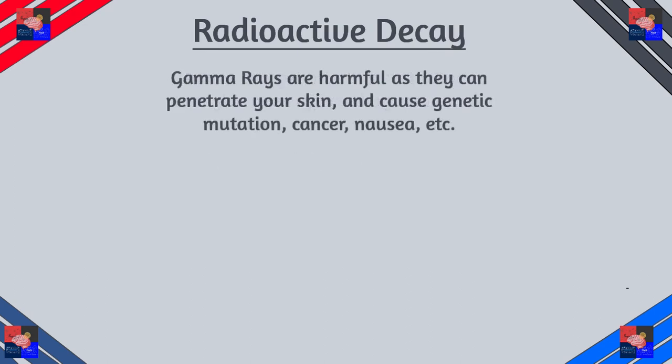Now gamma radiation can actually be really harmful for your body. It can penetrate through your skin, mutate your genes, and harm your DNA — as we will look over a long time from now in our biochemistry series, inshallah. And of course it has more side effects like nausea, etc.